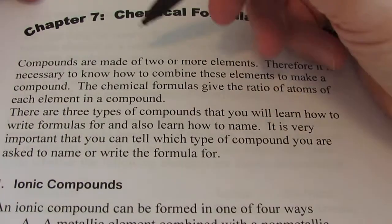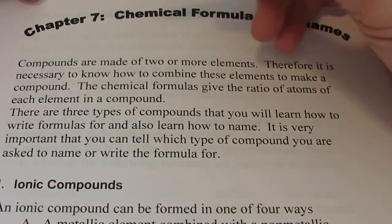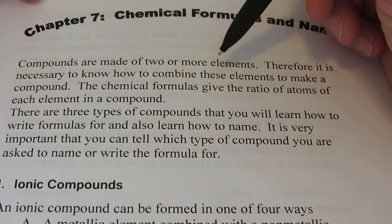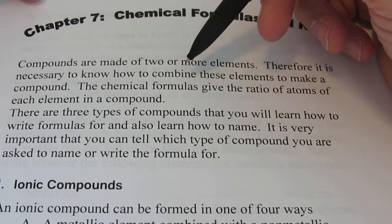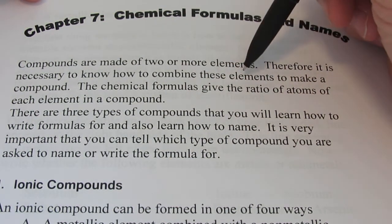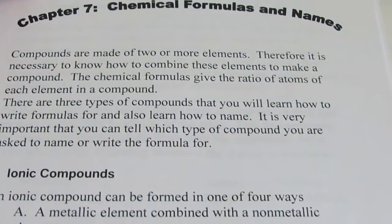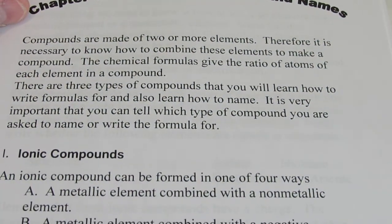So here we go. Compounds are made of two or more elements. Therefore, it's necessary to know how to combine these elements to make a compound. Chemical formulas give the ratio of atoms of each element in a compound.